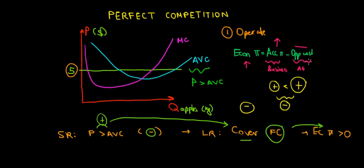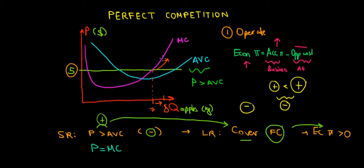One more thing: we cannot go higher than marginal cost per unit. To maximize profit we want price to equal marginal cost, and we can prove this on the graph. If we go above marginal cost in production — say we're selling seven kilos and want to sell eight — the additional cost of that kilo is higher than five dollars, so we're losing money on it. Decisions in microeconomics are made at the margin.